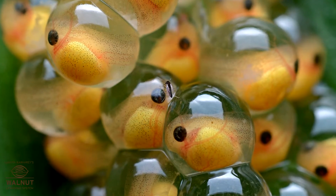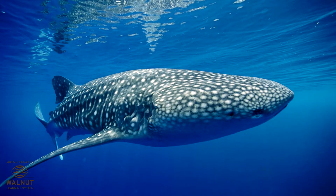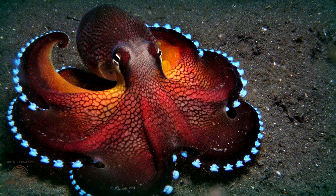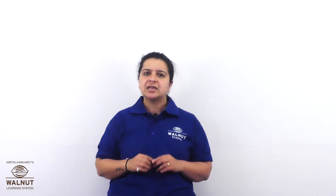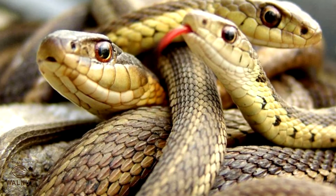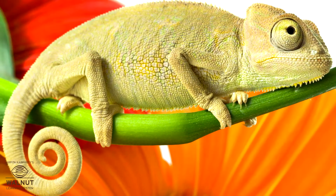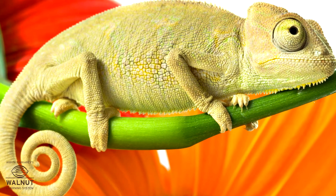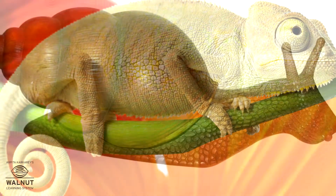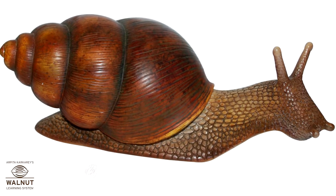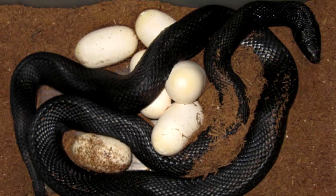They lay eggs. There are many more animals in the water than there are on land. The fourth group is the crawlers. This group has the snakes, lizards, chameleons and other animals that crawl. They have scales on their body. We cannot see their ears. They lay eggs.